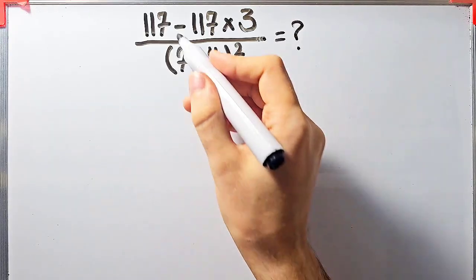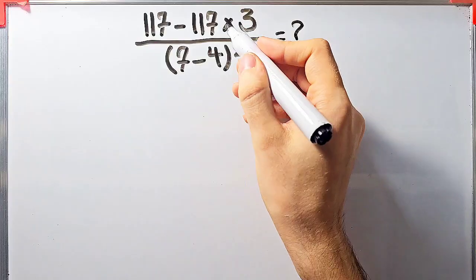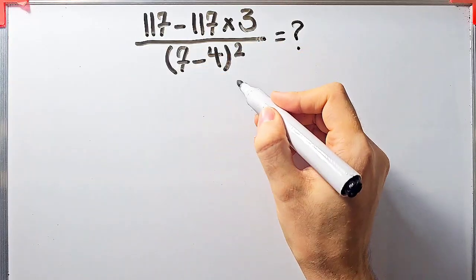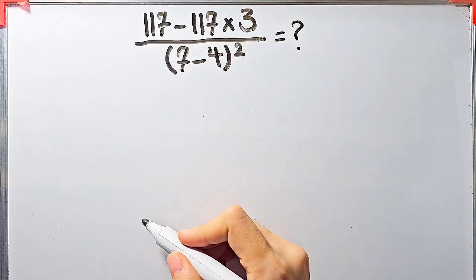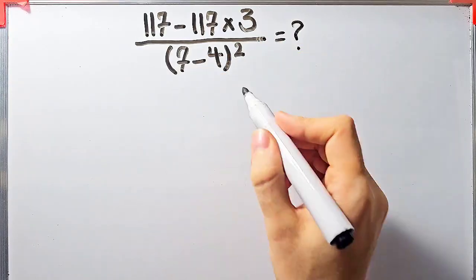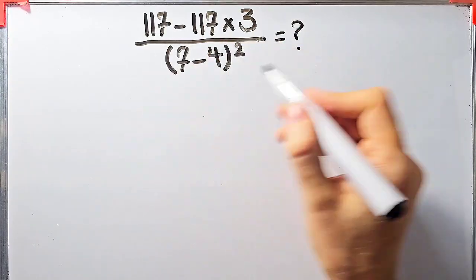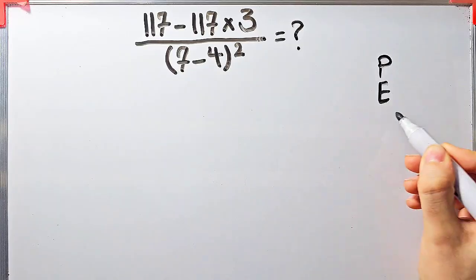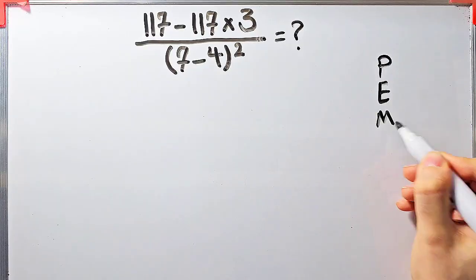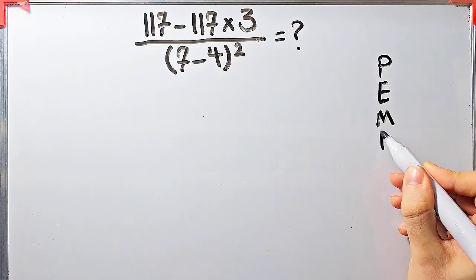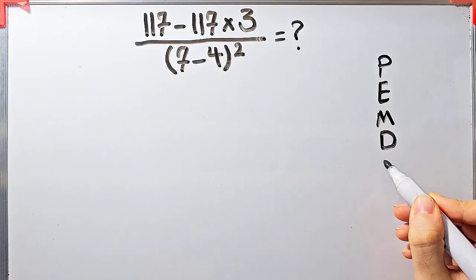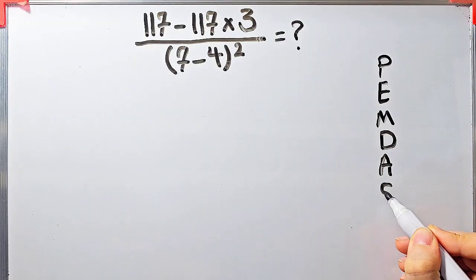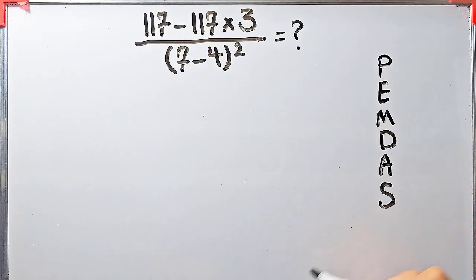In this question we have subtraction, multiplication, division, parentheses, and exponent. To solve this question we need to follow the PEMDAS rule. PEMDAS shows the priority of the mathematical operations, and if you don't pay attention to this rule you get the wrong answer.